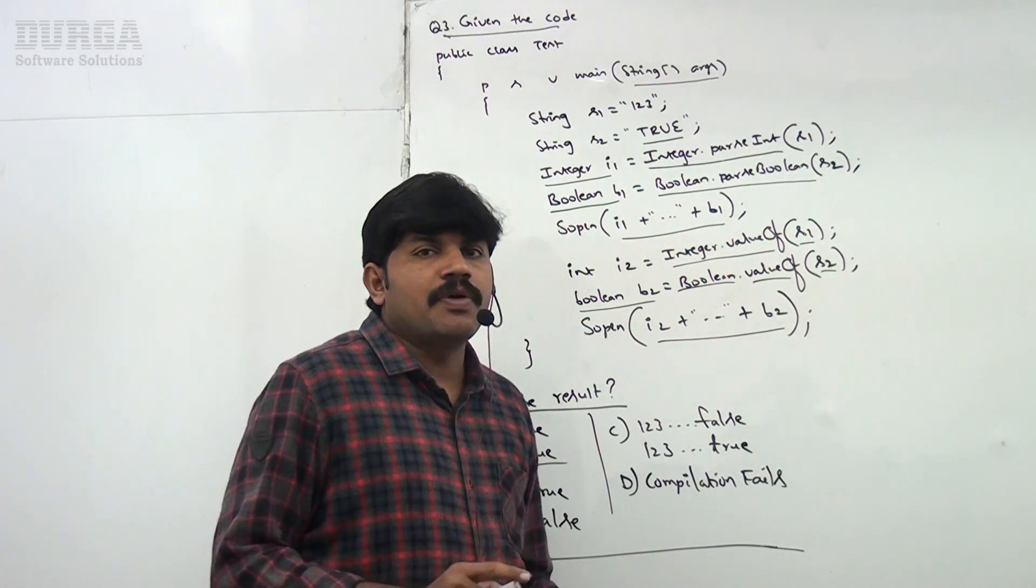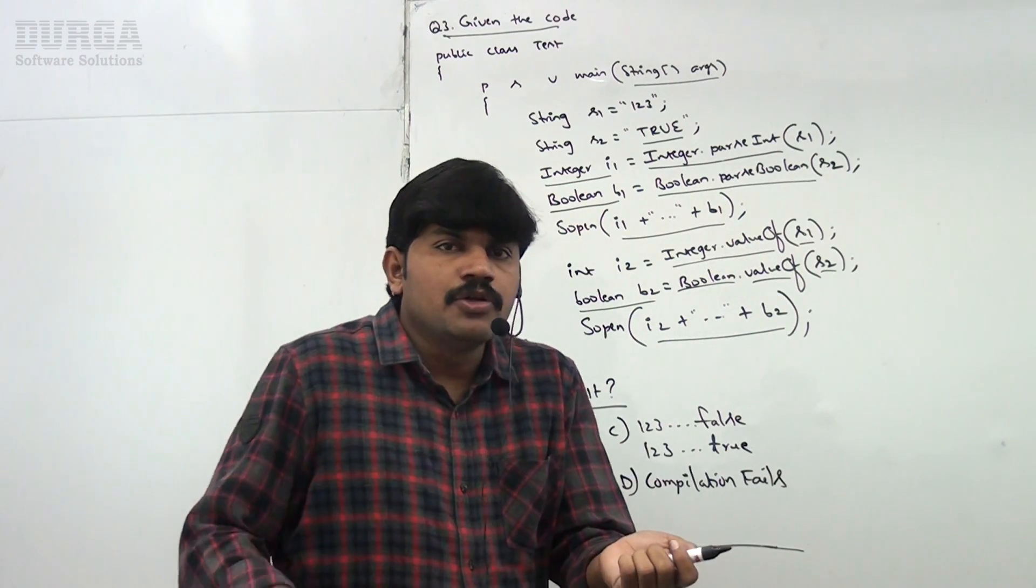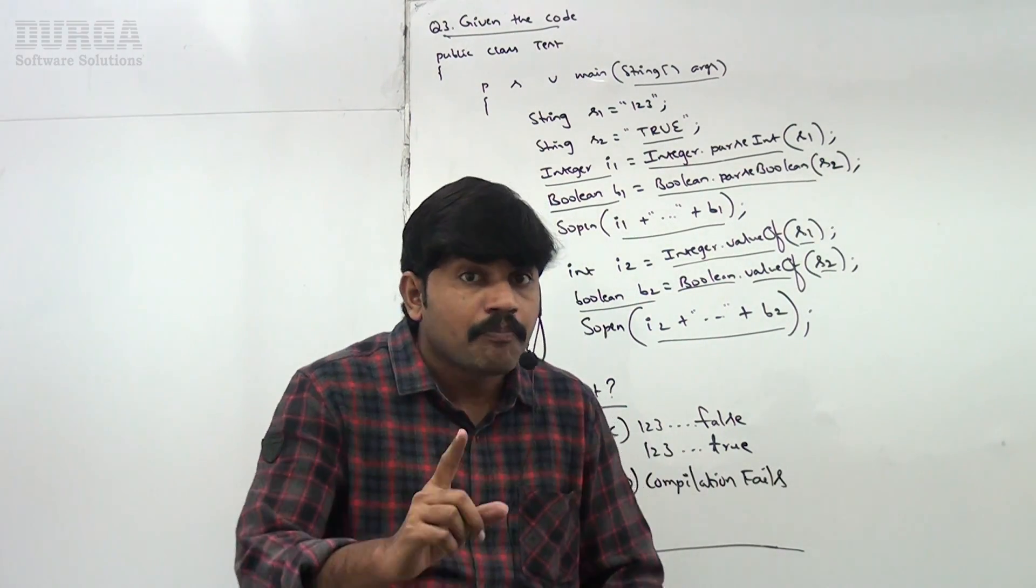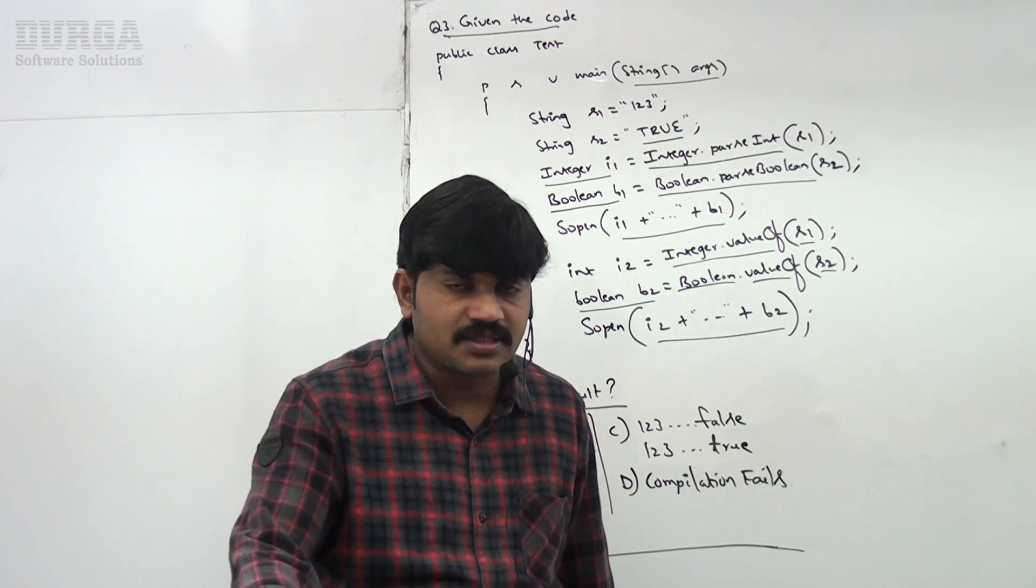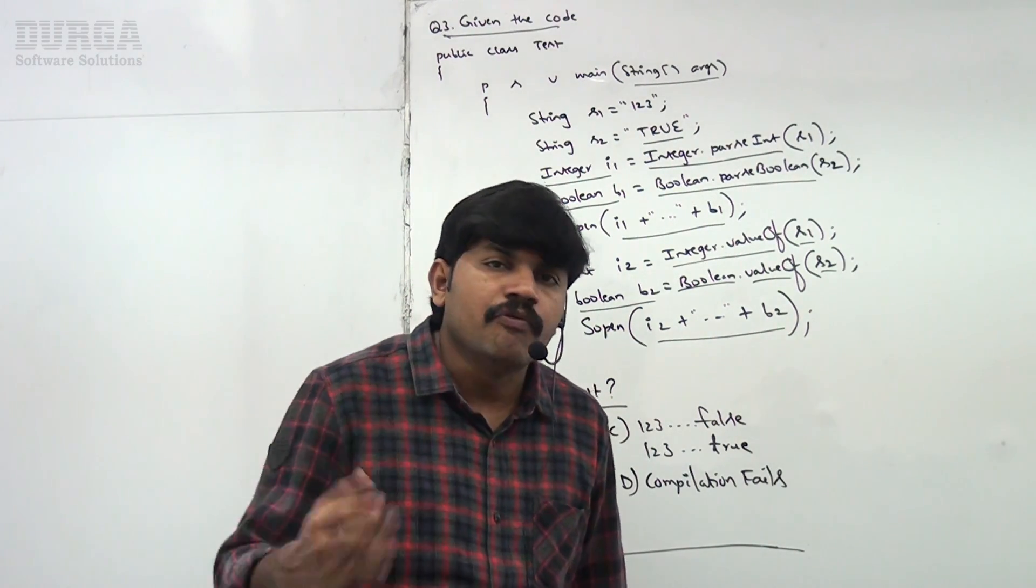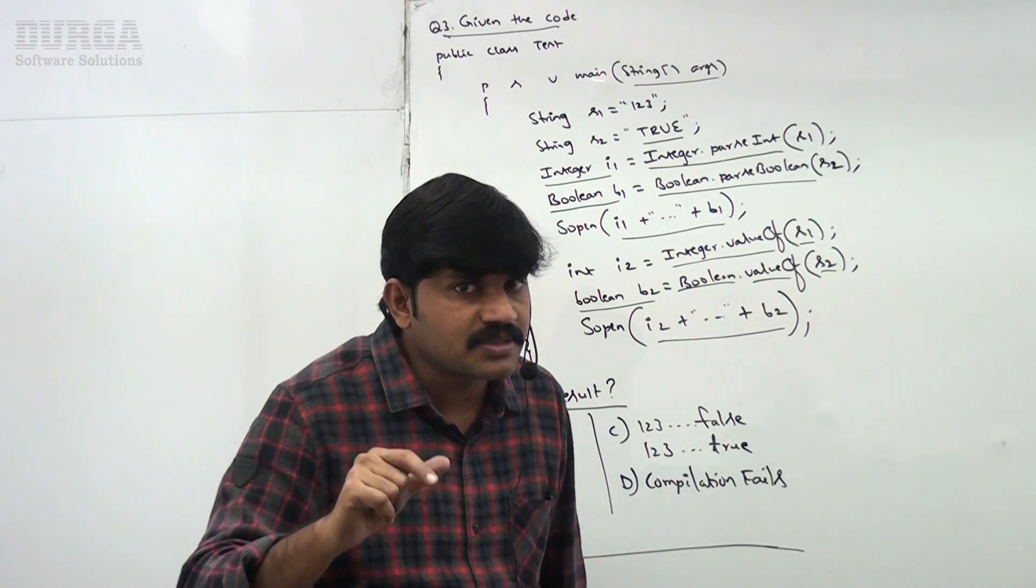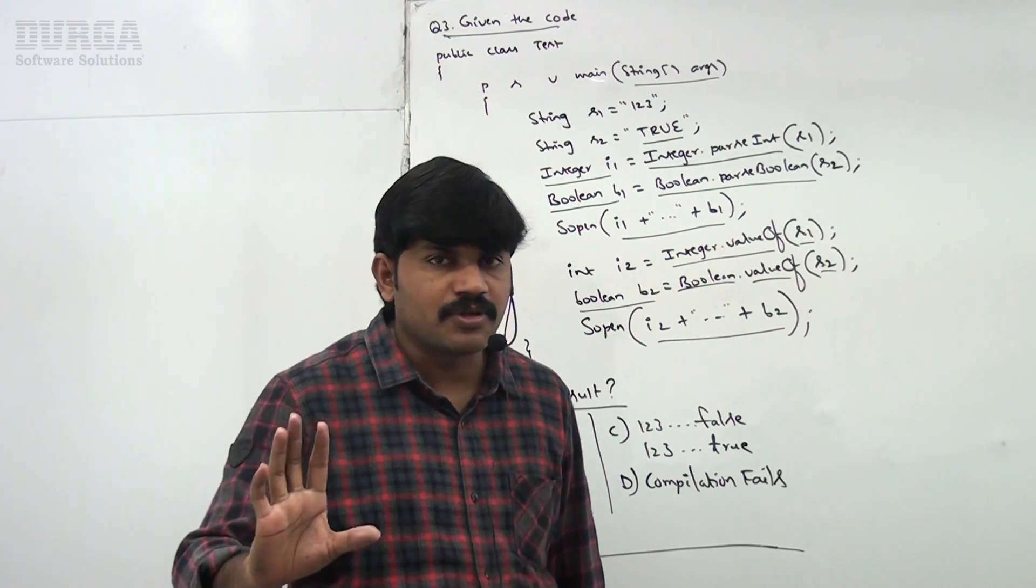Remember that next, moreover in the place of wrapper object you can use primitive. In the place of primitive you can use wrapper object because of auto-boxing and auto-unboxing concept. All the required conversions will take care automatically by the compiler. So this concept is called auto-boxing and auto-unboxing, right? Okay.